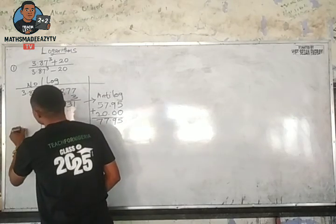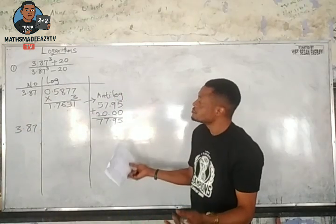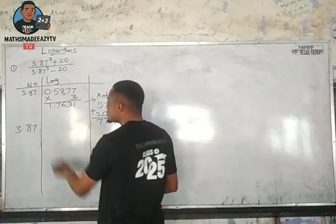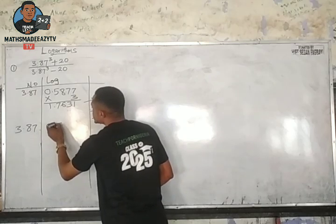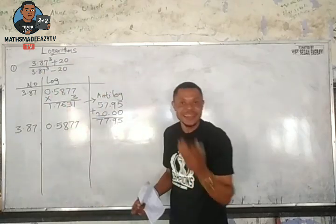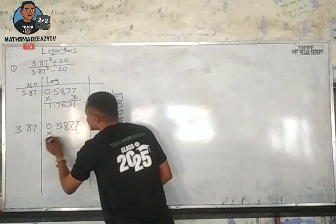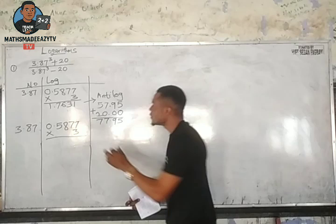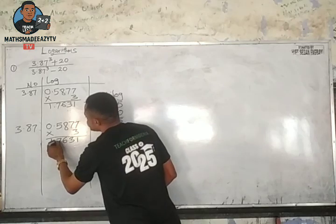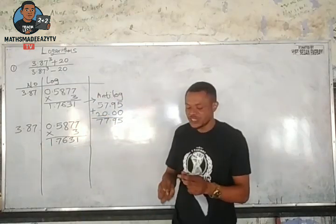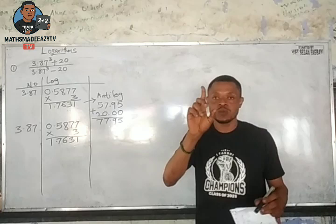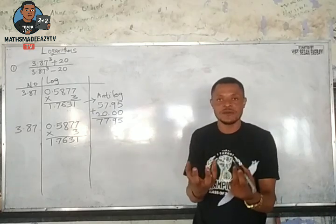Now the next thing is to go down for the denominator. This is 3.87. Of course, we have already checked the log rate of 3.87, so without wasting time, we will be having 0.5877 and also relating to the power of 3. So relating to the power of 3, we multiply by 3, which we have done justice to already. So this is going to be 1, 3, 6, 7, 1.